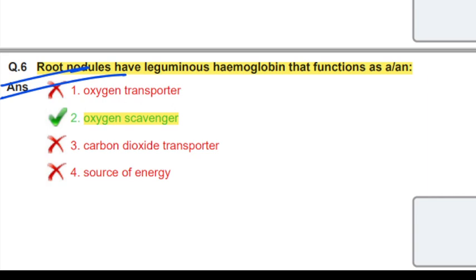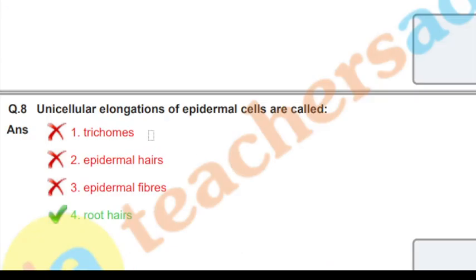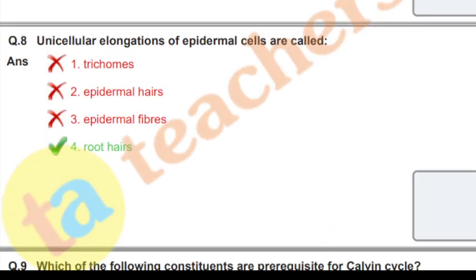Next question: the pollen grain wall does not have what? The answer is cellulose. The next question is about unicellular elongation of epidermal cells. What are these called? Root hairs. Important question.